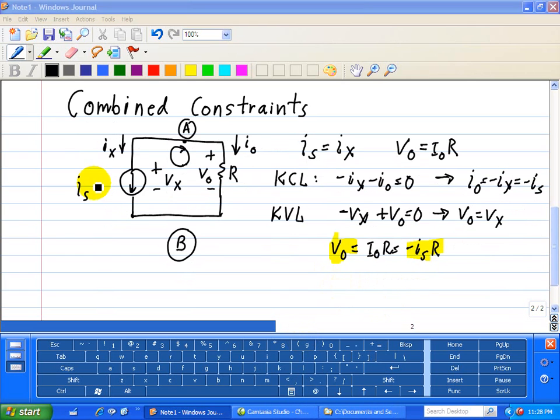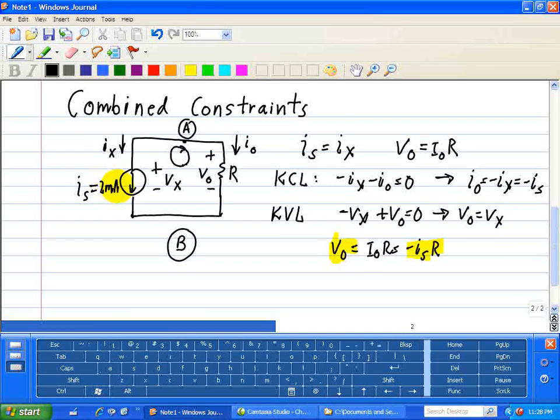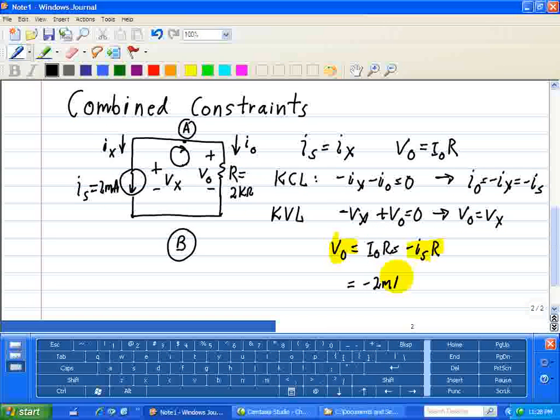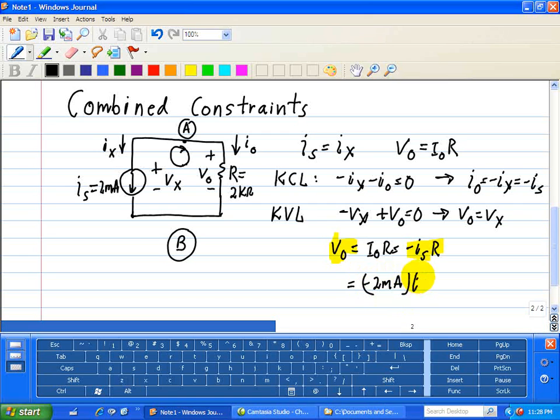Let's say IS equals 2 milliamps and R equals 2 kiloohms. What's our voltage? We know VO equals VX, so we just substitute. It's minus 2 milliamps times 2 kiloohms equals minus 4 volts. And that's our answer for this problem.